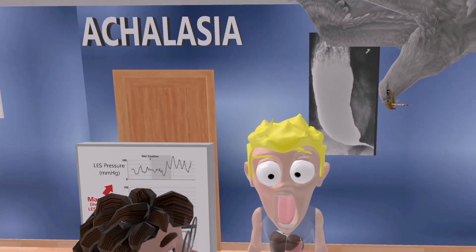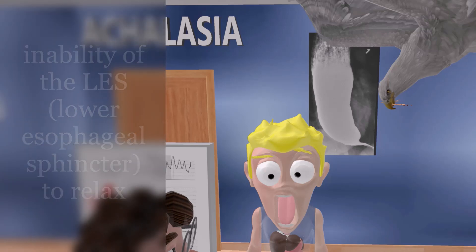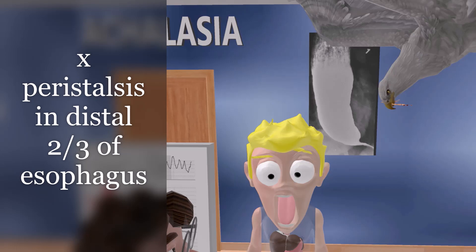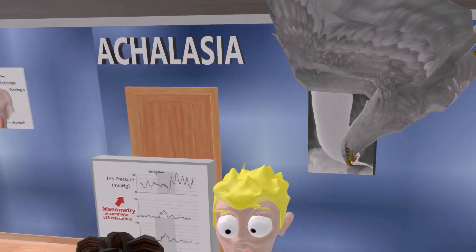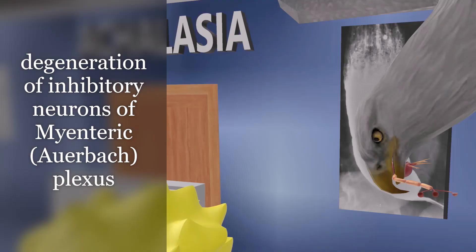The patient can't relax — this is the mechanism behind achalasia: an inability of the lower esophageal sphincter to relax, along with a loss of peristalsis in the distal two-thirds of the esophagus. This occurs due to degeneration of the inhibitory neurons of the myenteric (Auerbach's) plexus, leading to impaired relaxation of the LES.